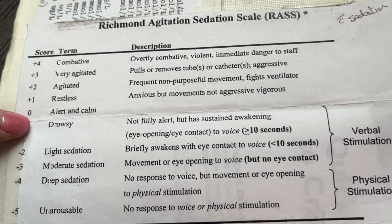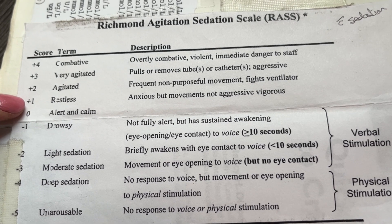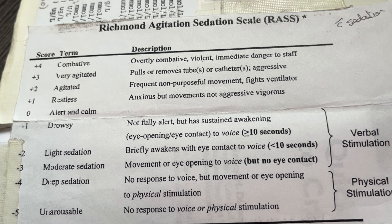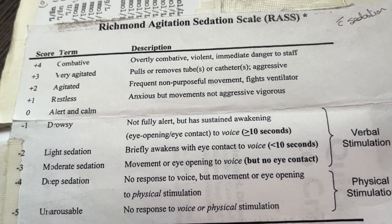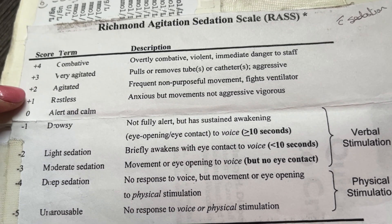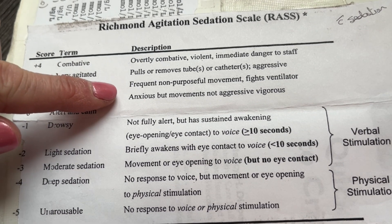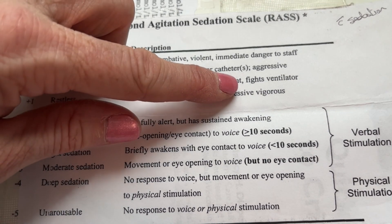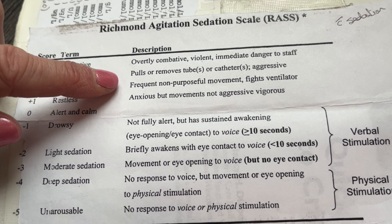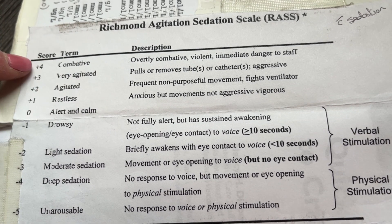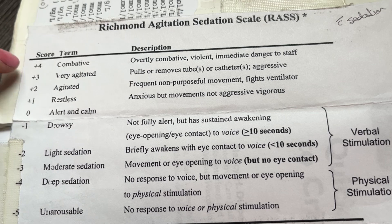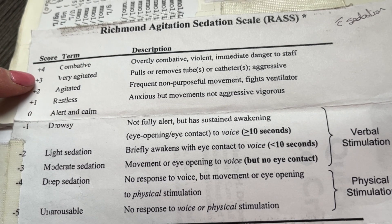A plus one is restless: the patient is a bit anxious, their movements might be slight — continuing to put their hand to their face or scratching their leg. They're just not settled, and the key thing is they're not aggressive. A plus two is agitated: more frequent non-purposeful movement and fighting the ventilator. A plus three is very agitated: pulling at lines, tubes, and catheters — considered aggressive. A plus four is combative: overtly combative and violent, a danger to staff.